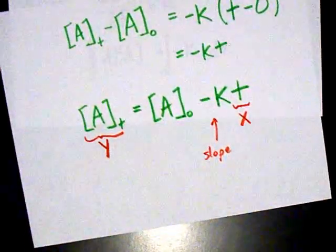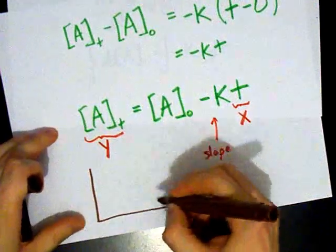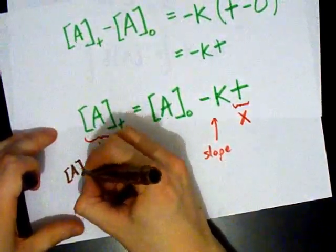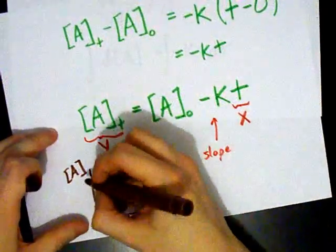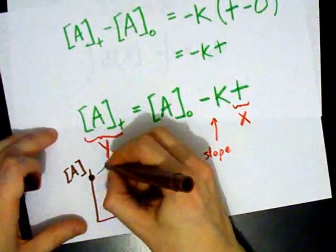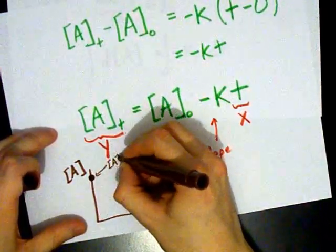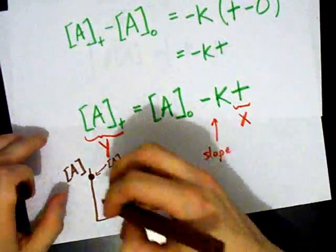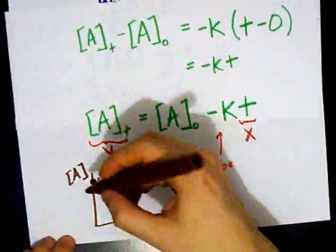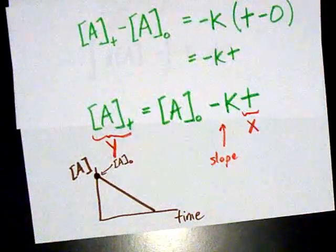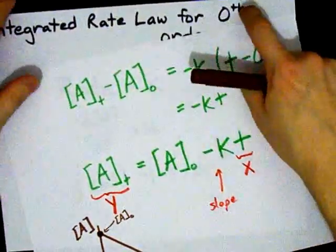Let me do a little sketch of that for you, just so we don't get it confused or twisted. This is your concentration axis. This is your time axis. Your y-intercept is up here at your initial concentration, and you have a slope of negative k. This is what the concentration versus time graph looks like for a zero order reaction.